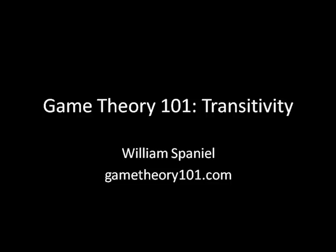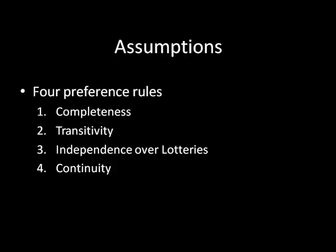As you'll recall, we're currently in a series of lectures going over the four preference rules that we need our individuals to have in our game theoretical models for the expected utilities to all work out properly. Last time we went over completeness, today we're going to go over transitivity. Remember that someone who has complete and transitive preferences is rational by our game theoretical definition of rationality.